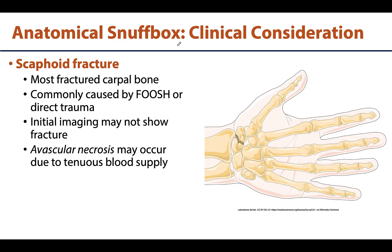Before we finish, I want to focus on one of the bones forming the floor of the snuff box — the scaphoid, which is the most commonly fractured carpal bone. This fracture, similar to a Colles' fracture, is often caused by a fall on an outstretched hand — or FOOSH, love to say that, don't love to do it — though direct trauma can also cause it, though that's rarer.